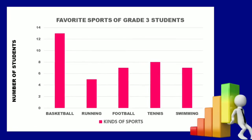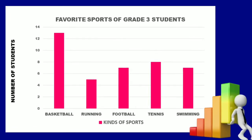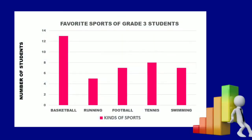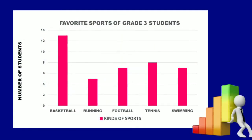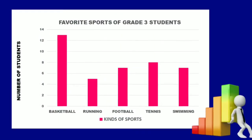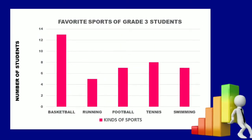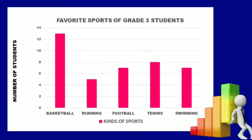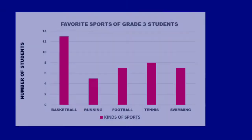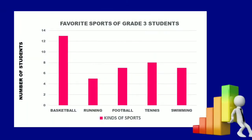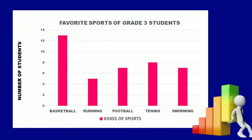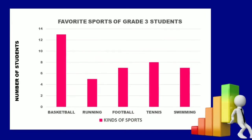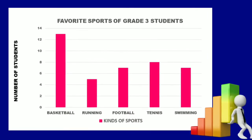The data on the x-axis is about the kinds of sports, while on the y-axis is about the number of students. The number of students whose favorite sport is basketball is 13.